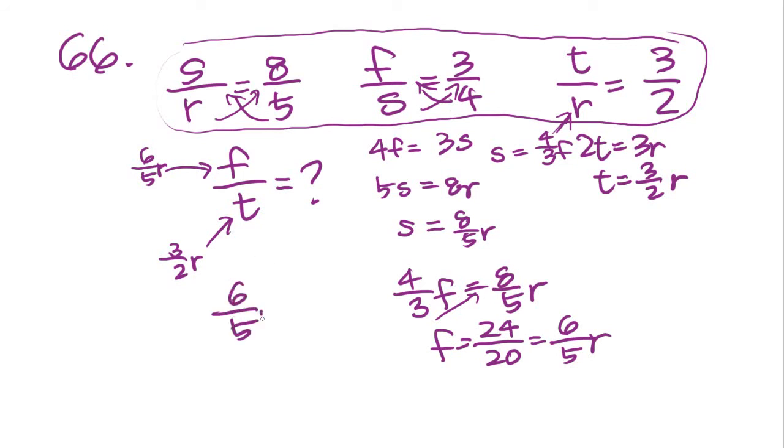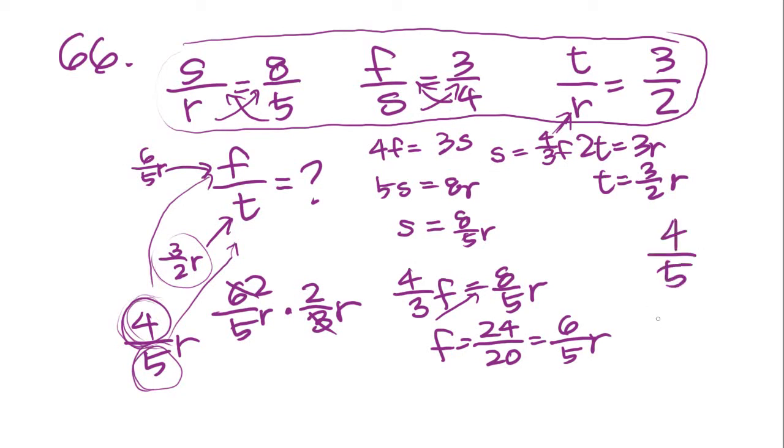Let's do some division then. 6/5R over T is the same as saying 6/5R multiplied by 2/3R because that's the reciprocal of T. Cancel out and you get 4/5. The numerator is the ratio of F and the denominator is the ratio of T. We're looking for F over T, so the answer is going to be 4 to 5, and that is answer choice B.